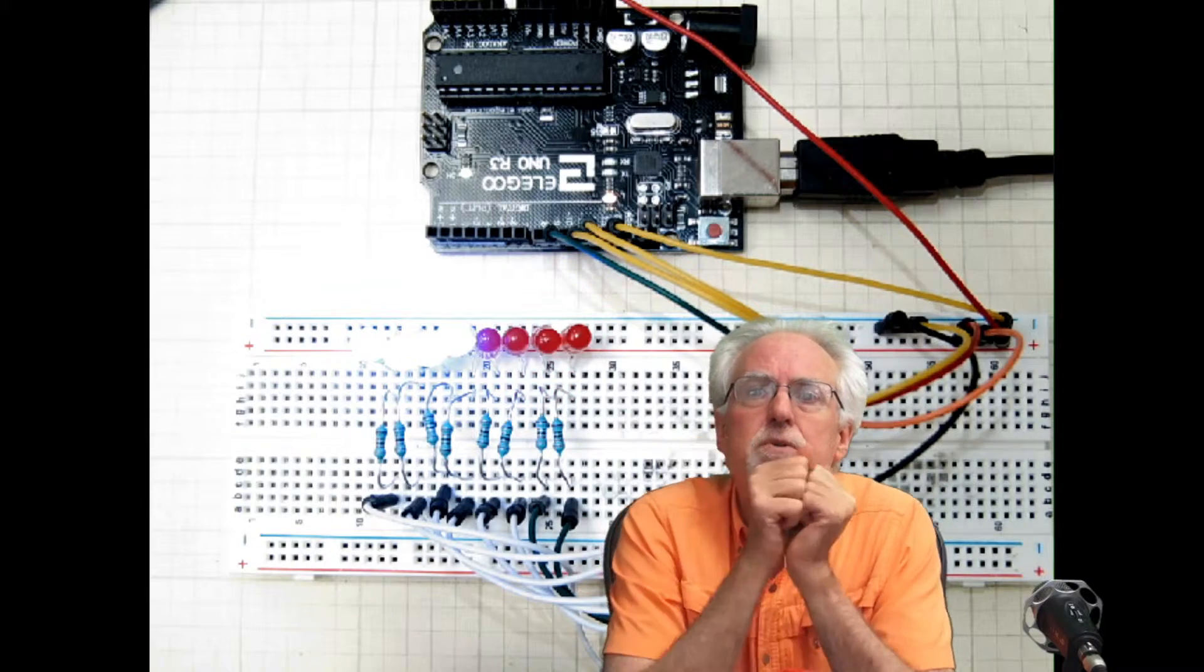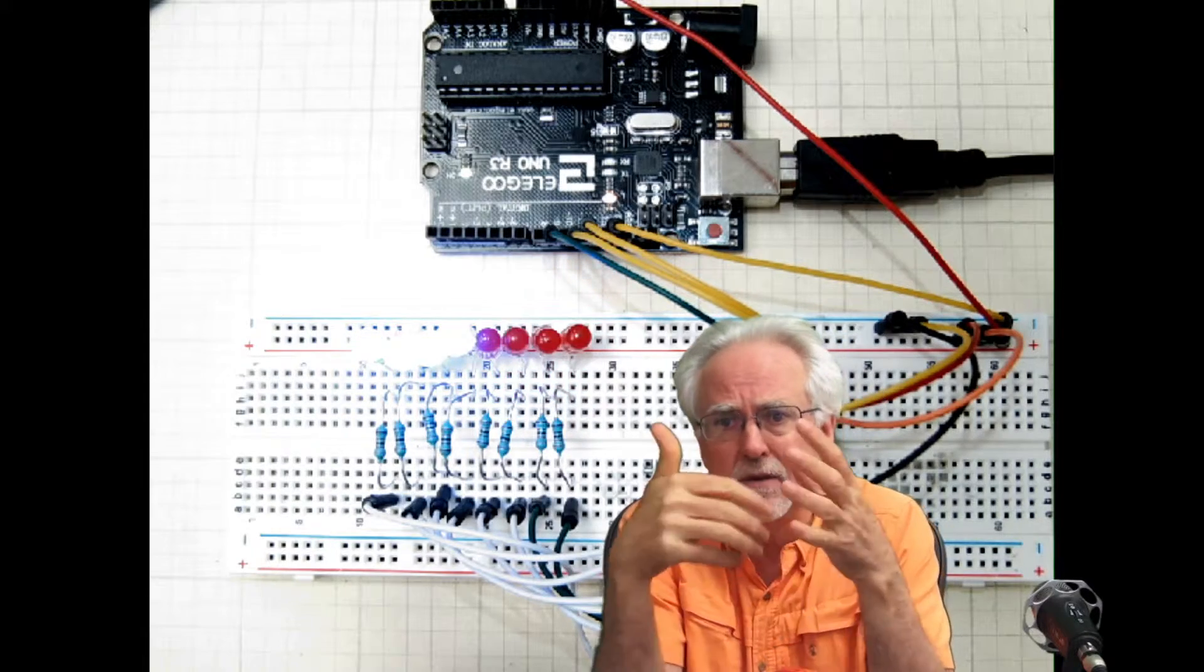So what the assignment is is to make a bit flipper, and what that means is you put a binary or a hexadecimal number into Arduino as a byte. You remember in our earlier code, we were calling that byte my byte?